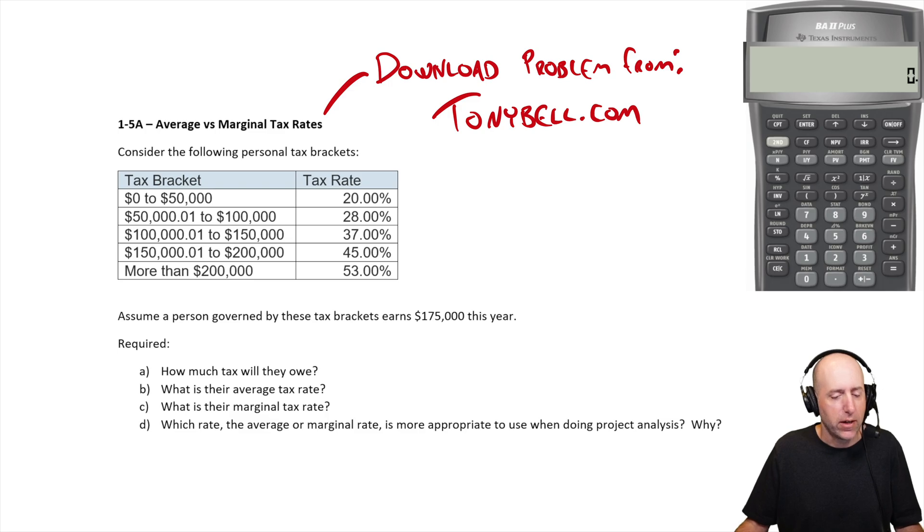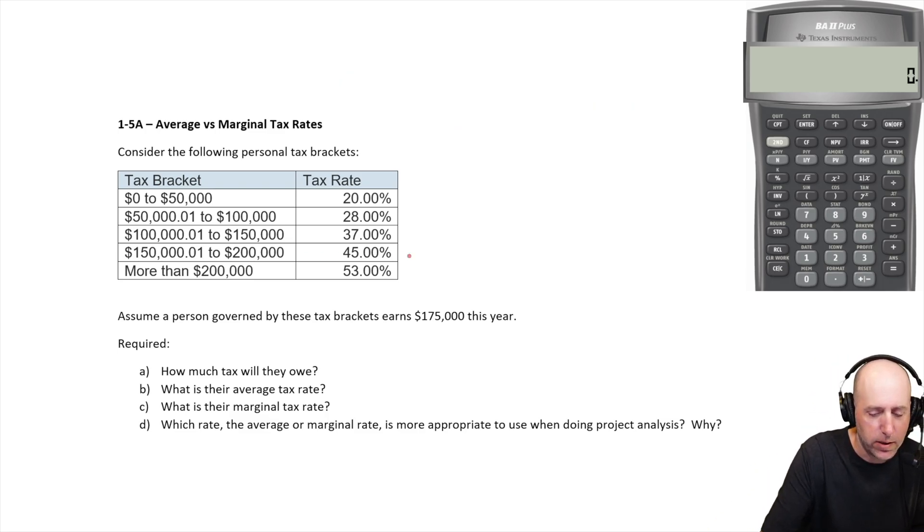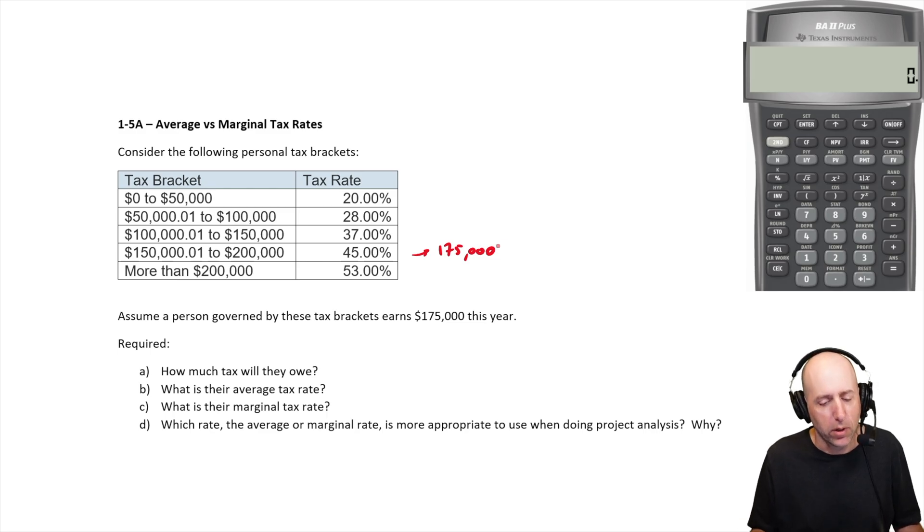How much tax do they owe? Okay, the rookie mistake is you find $175,000 on the table. You'd say, oh, it's somewhere on this line of the tax bracket. We would earn $175,000. Therefore, $175,000 times 45%. That's how much I owe in taxes. That's not how tax brackets work.